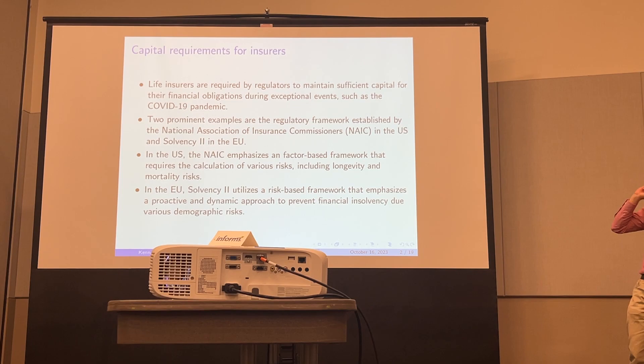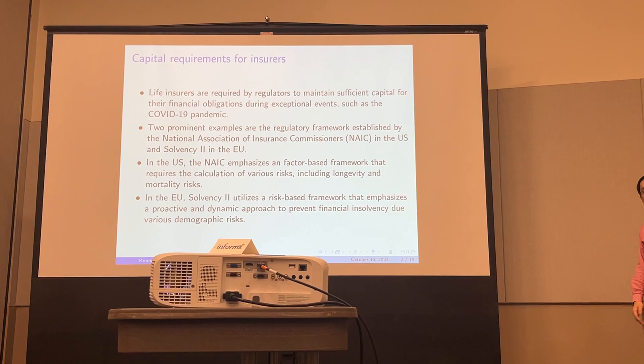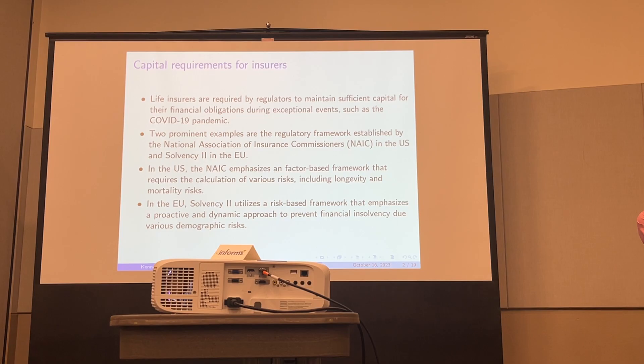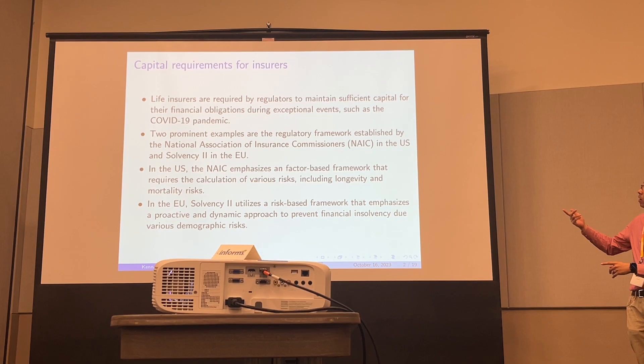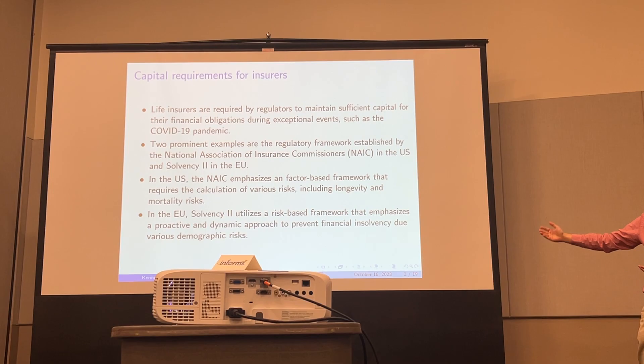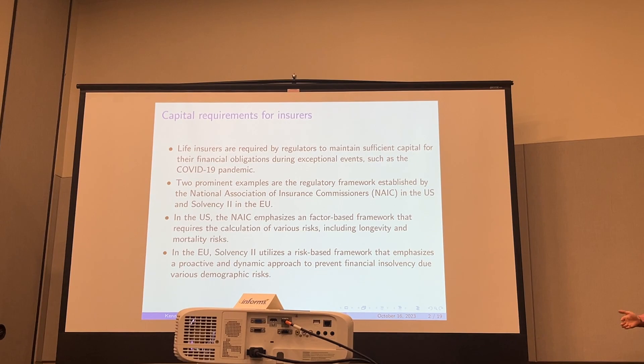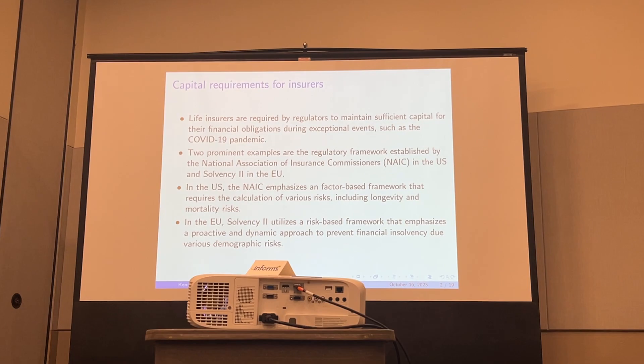Let me quickly introduce what this capital requirement is. In the insurance industry, life insurers are required by regulators to set aside some money for all their liabilities. For example, when they issue a life insurance product, they have to set aside money to prevent future changes in those liabilities. These changes could come from mortality — for example, COVID-like changes. The cash flow and liability under a product could change dramatically; if many people die, more needs to be paid out.